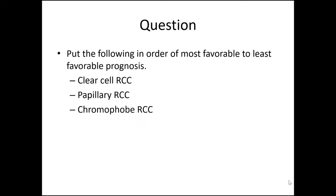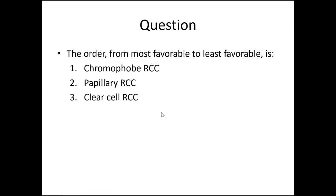Put the following in order of most favorable to least favorable prognosis: clear cell renal cell carcinoma, papillary renal cell carcinoma, and chromophobe renal cell carcinoma. The most favorable would be chromophobe renal cell carcinoma, followed by papillary renal cell carcinoma, and the worst would be clear cell renal cell carcinoma.